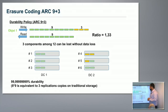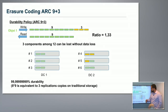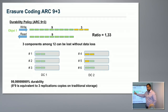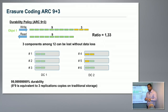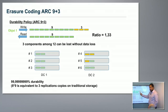For erasure coding, we take an object and split it into pieces — in this case nine plus three: nine data pieces stored on nine different servers, and three computed parity pieces. The nine data pieces are kept intact and not erasure coded, so if you want to read the data with no failure, you go directly to the clear data without computing anything. In case of error, you use the parities to rebuild missing pieces.